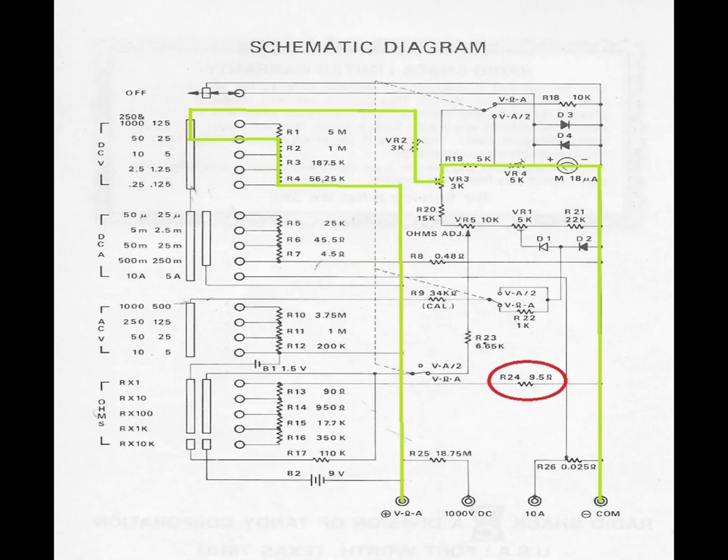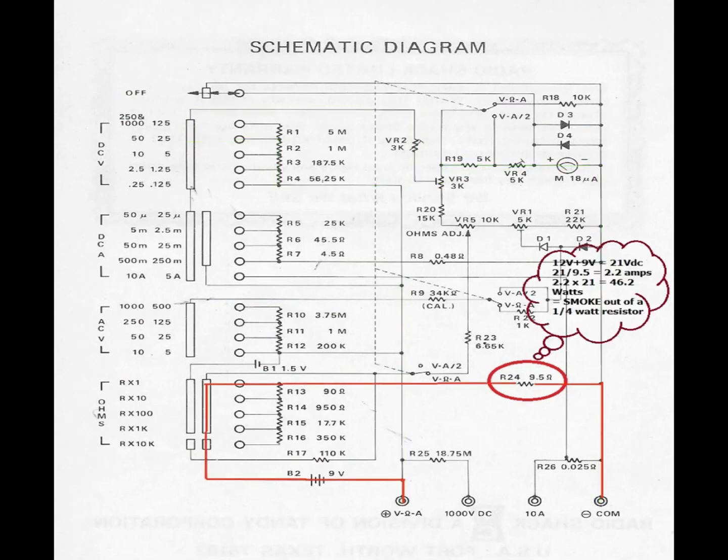This was the path that the 12-volt should have taken through a lot of resistors before it went to the dial and then to ground. This is the path that it ended up going through that one resistor on the ohm setting straight to ground. That resistor was trying to handle 40-plus watts. And that's why it smoked.